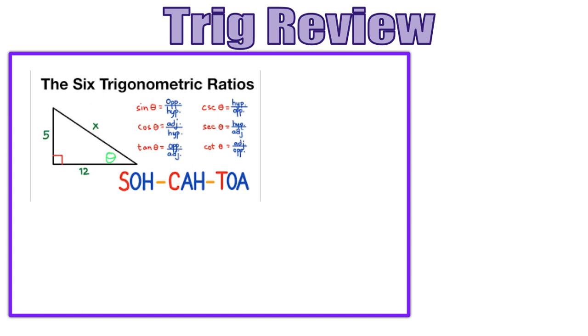Our hypotenuse, well, this is a 5, 12, 13 right triangle, or you could do the Pythagorean theorem to find that. From this angle theta, our sine would be 5 over 13, which means our cosecant would be 13 over 5.